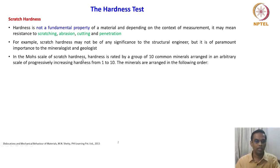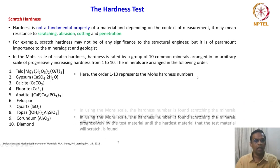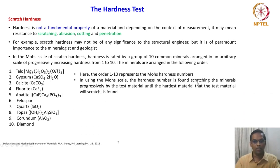In the Mohs scale of scratch hardness, hardness is rated by a group of 10 common minerals arranged in an arbitrary scale of progressively increasing hardness from 1 to 10. The minerals are arranged in the following order: talc, gypsum, calcite, fluorite, apatite, feldspar, quartz, topaz, corundum, and diamond. The order 1 to 10 represents the Mohs hardness numbers. In using the Mohs scale, the hardness number is found by scratching the minerals progressively with the test material, until the hardest material that the test material will scratch is found.